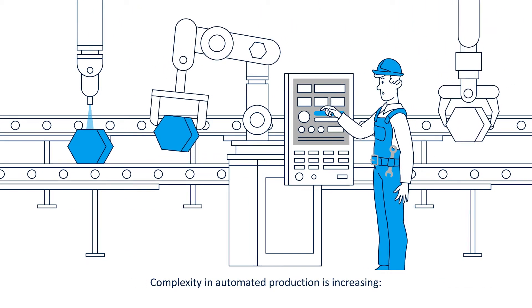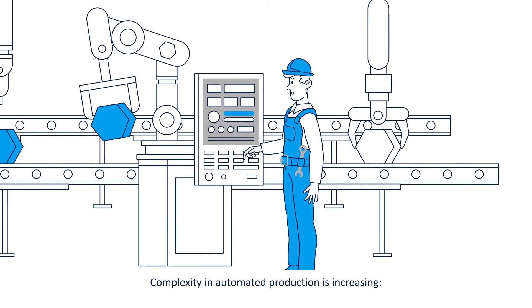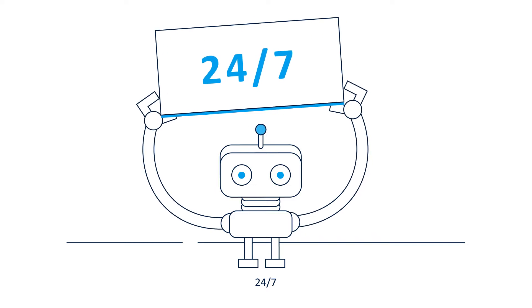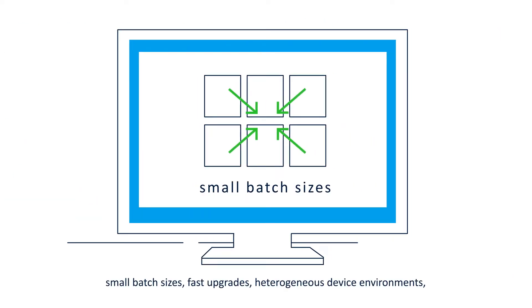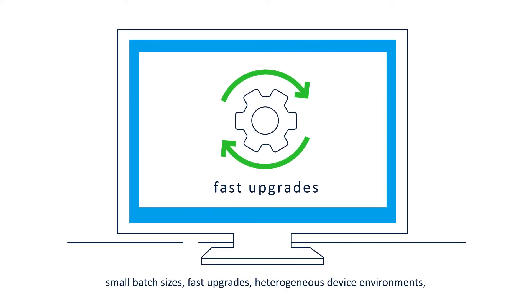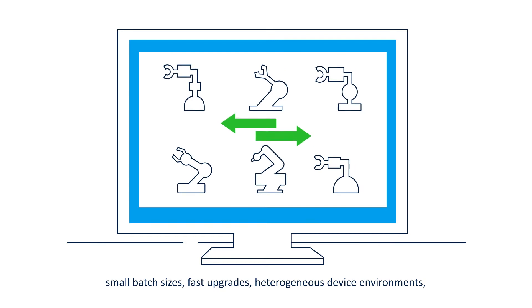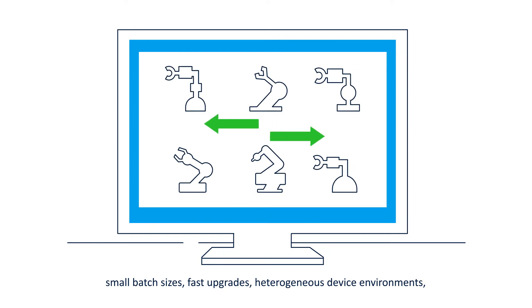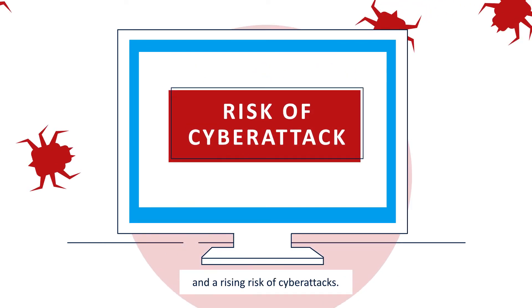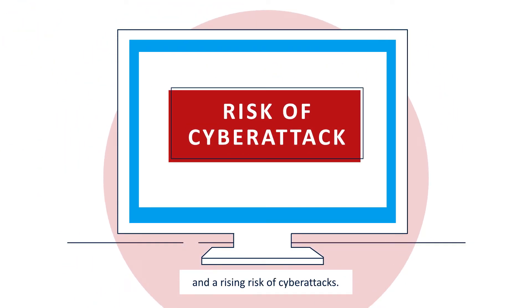Complexity in automated production is increasing 24-7: small batch sizes, fast upgrades, heterogeneous device environments, and a rising risk of cyber attacks.